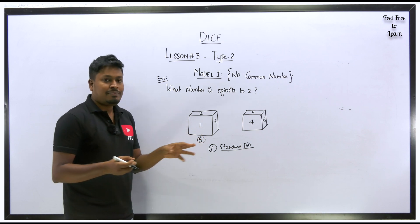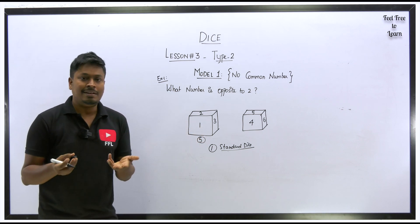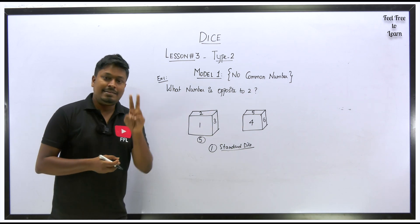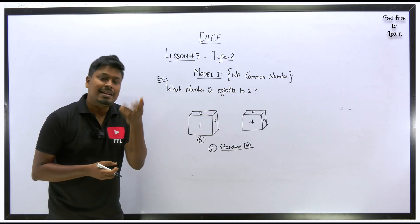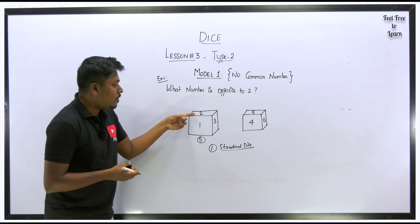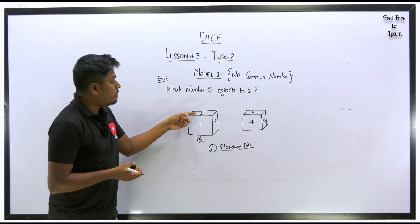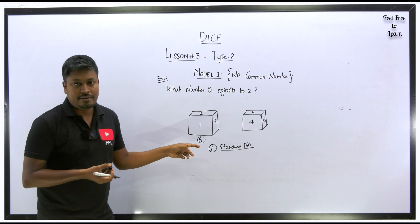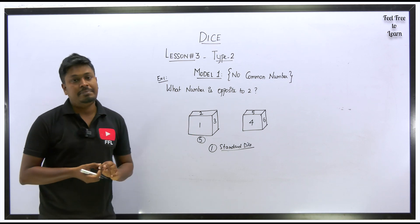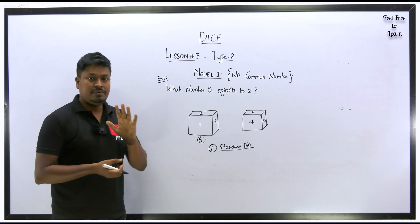For this example we don't need any shortcut because there is no common number in both diagrams and we know it is a standard dice. Since opposite faces of a standard dice sum to 7, the opposite of 2 is definitely 5. Answer: opposite to 2 is 5.